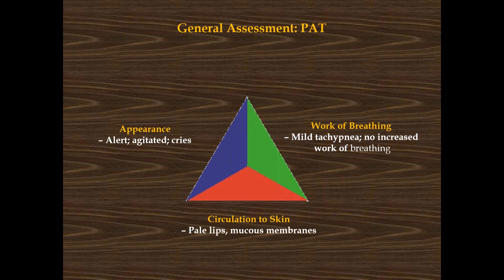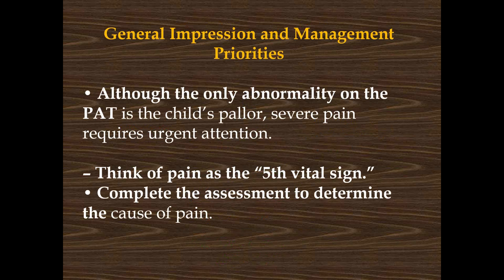That paleness is the big thing we're seeing. So what's our general impression? This kid is sick. And if he's sick, is he a little sick or a lot sick? Think about that. About the only abnormality we really see is that paleness, but because this kiddo is having severe pain, that certainly requires our attention. Let's think of severe pain as our fifth vital sign — if a patient has pain, even if all their vitals are normal, we want to think about that pain because it's telling us something is wrong.